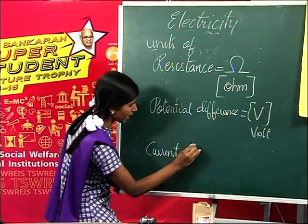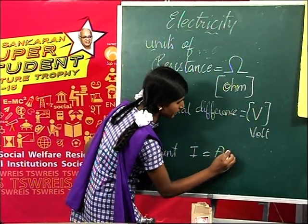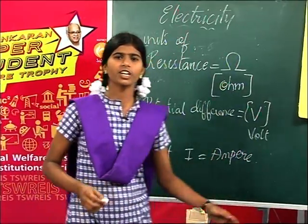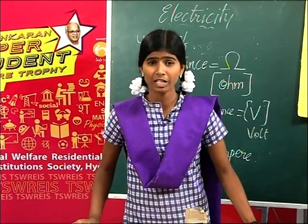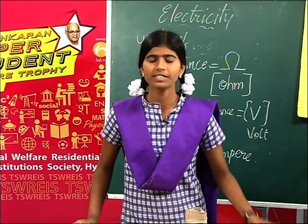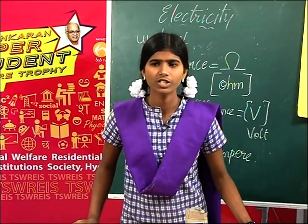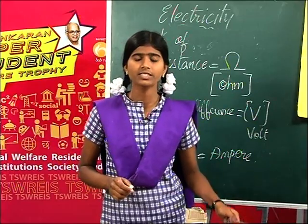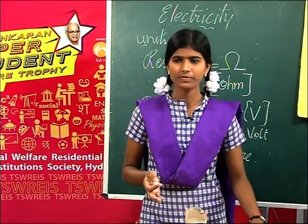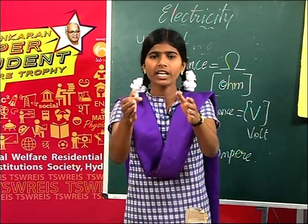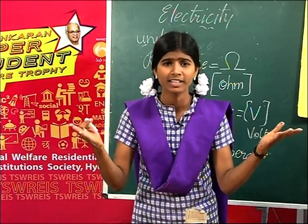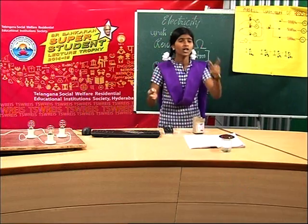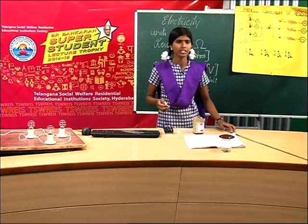For potential difference, the unit is volt. For current, it is ampere. It is very important to know the units because in higher classes you will have sums depending on units. Everything around us is physics — you are watching on TV, and that is only because of physics. Without physics, it is impossible; everything depends upon physics.